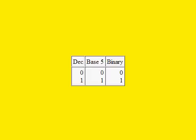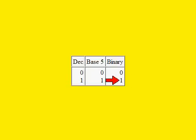So, let's compare counting in decimal, base 5, and binary. As you can see, the first two counts are the same in all three bases. However, on the binary column, we've already run out of symbols to count with.